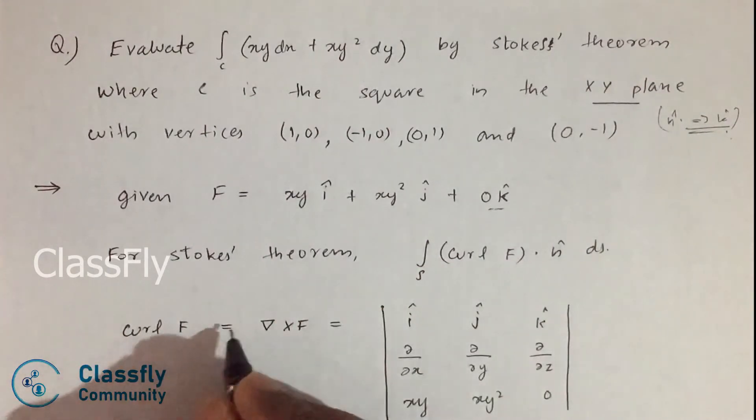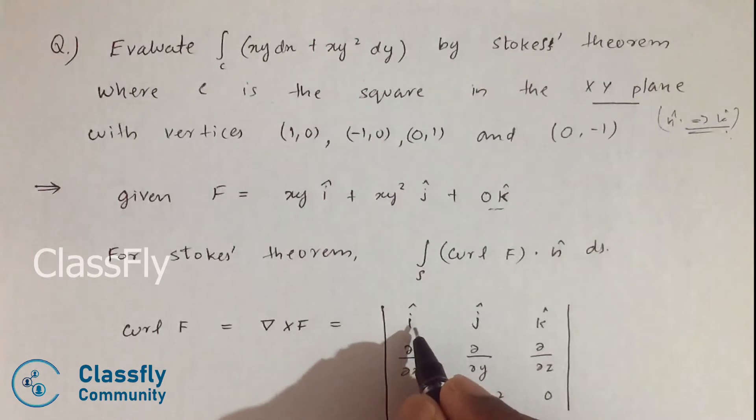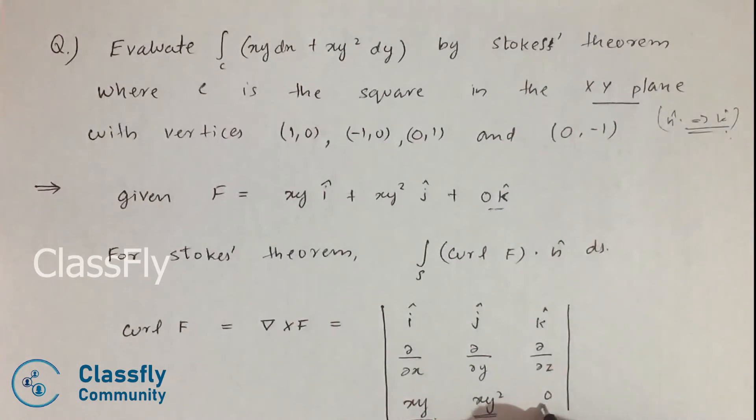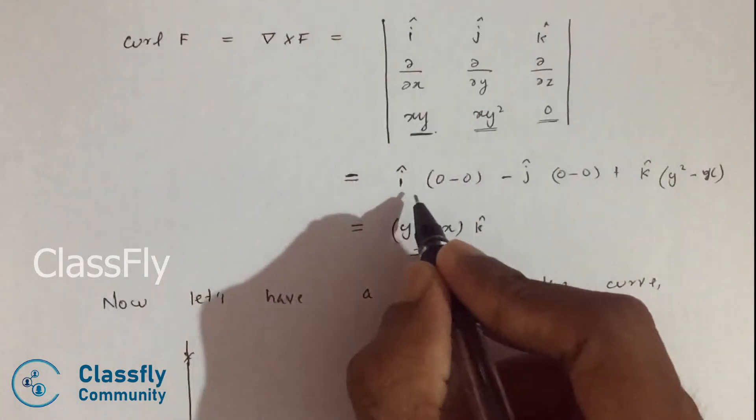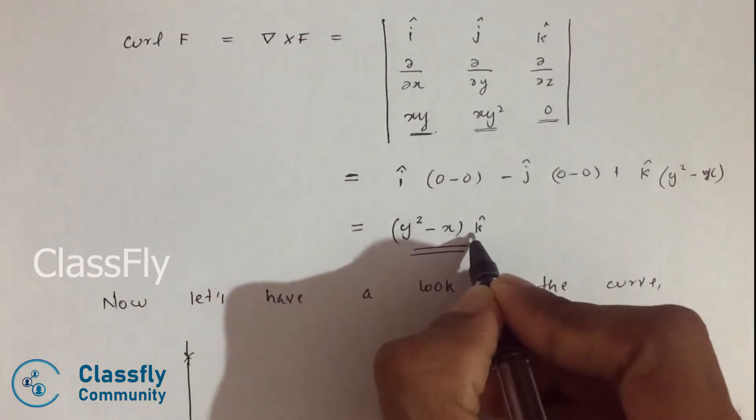Therefore curl F equals del cross F, which is the determinant of this one. Here this is the i component and j component, here it's k component which is 0, and the solution of this determinant is (y squared minus x) k cap.